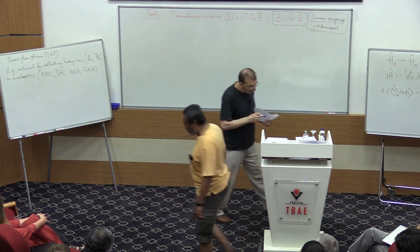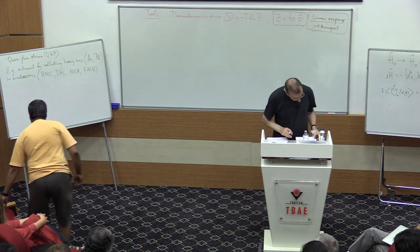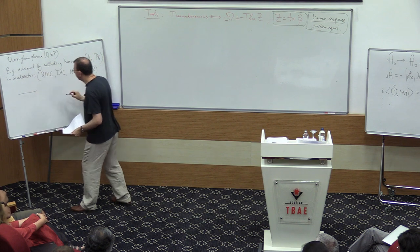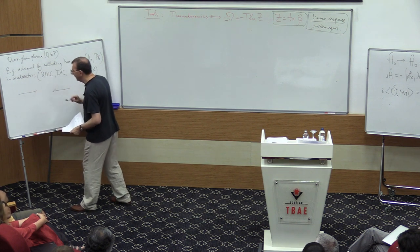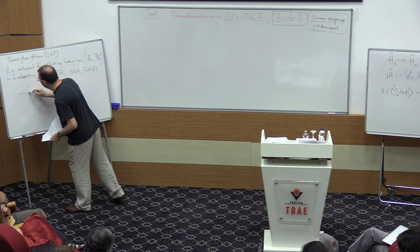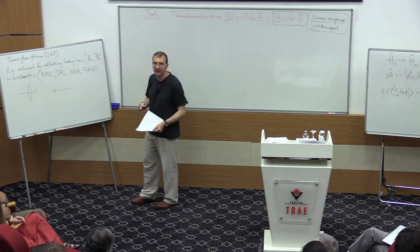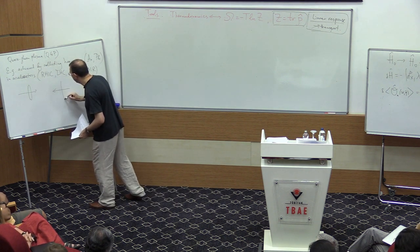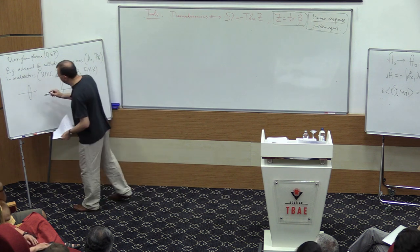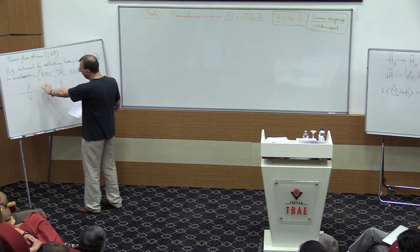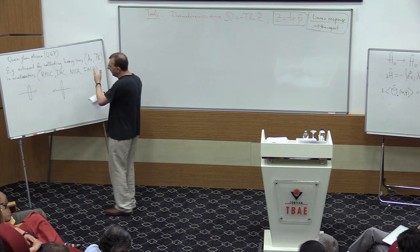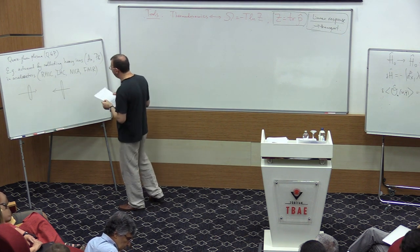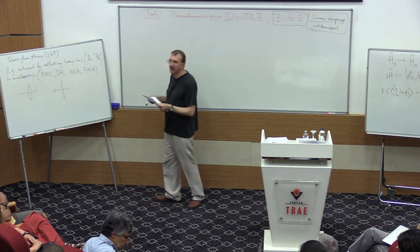What happens is that there is a collision of these ions. These ions are moving with speeds close to the speed of light and are therefore Lorentz-contracted — basically pancakes, often modeled by infinitely thin pancakes. They collide with some offset and produce a state of nuclear matter with rather extreme characteristics.